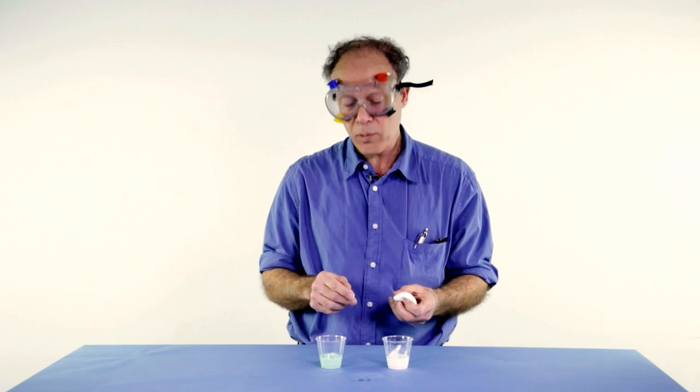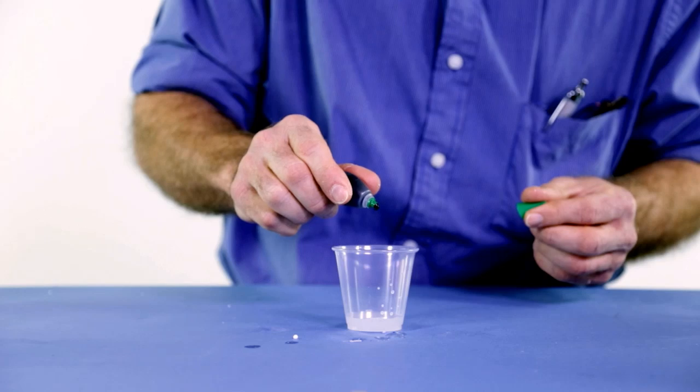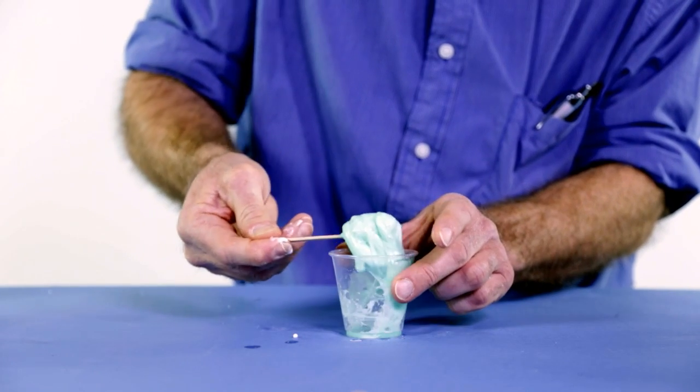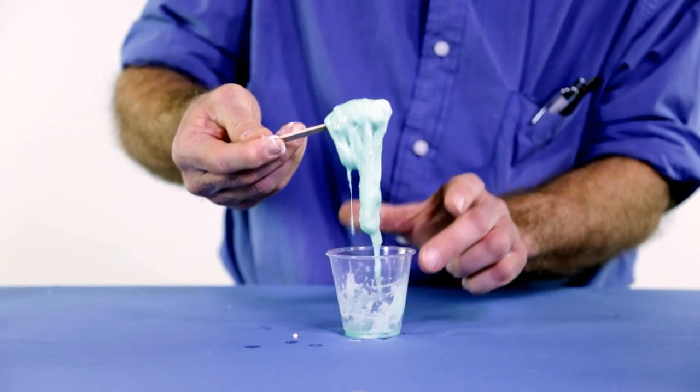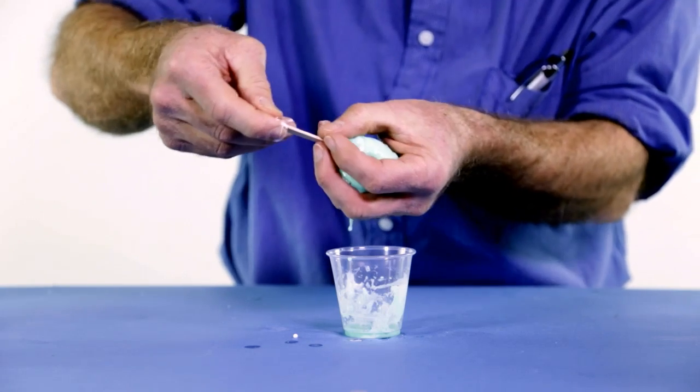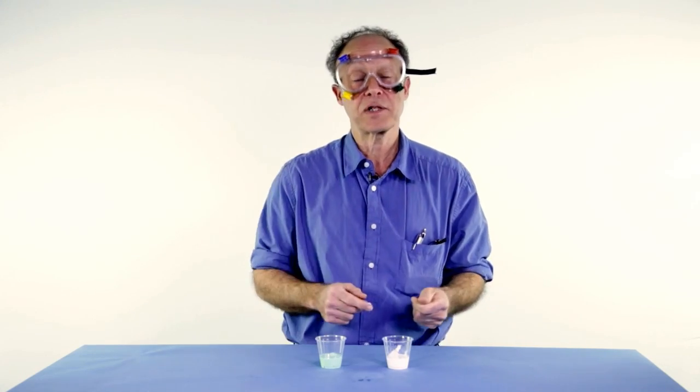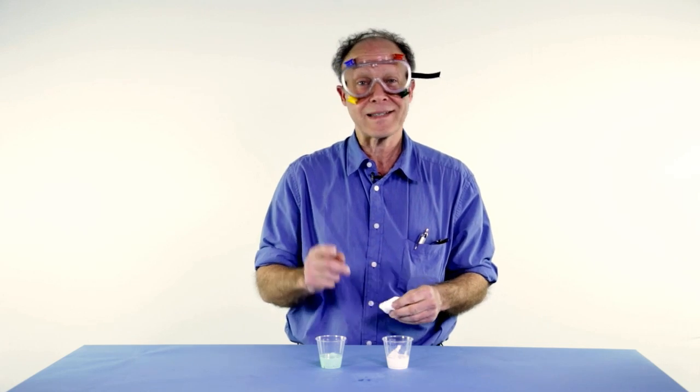There's another thing you can do if you want. You could take one drop of food coloring and add it to your borax solution and then add it to the glue solution and stir. So your slime would be colored. It's pretty fun. So you guys have a good time experimenting and making slime with chemistry.